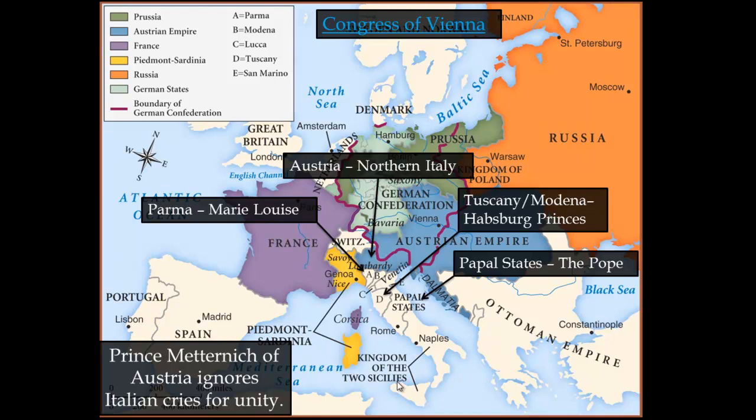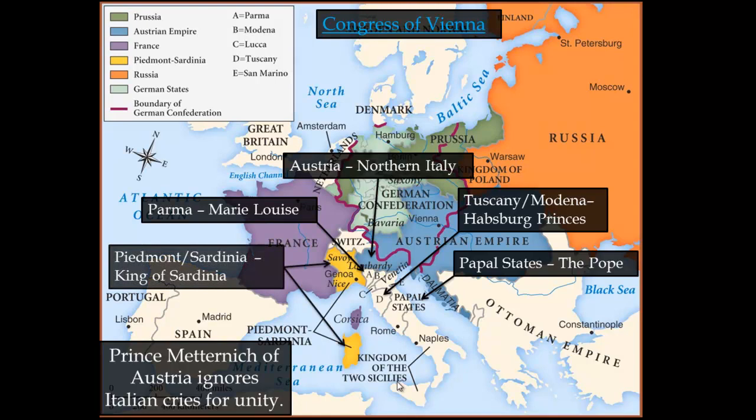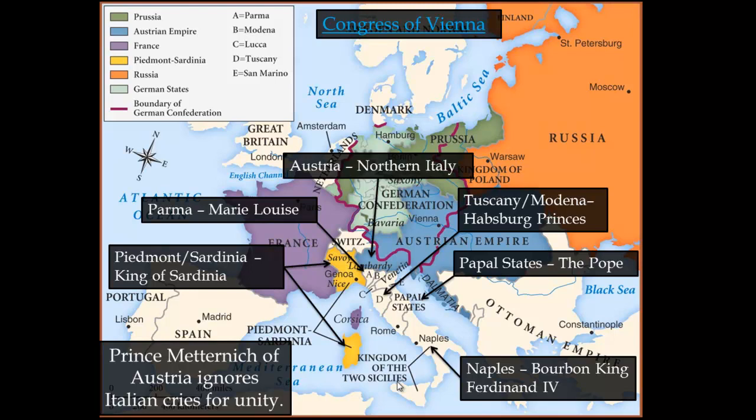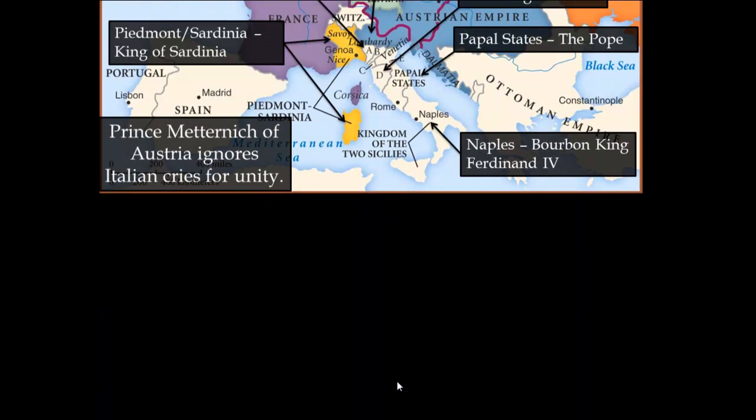The Papal States belonged to the Pope. The area of Parma belonged to Marie Louise, who was actually Napoleon's wife. The areas of Piedmont and Sardinia, the two areas in yellow, belonged to the king of Sardinia. And the final one, the area in southern Italy, belonged to the Bourbon king Ferdinand IV. So as you can see, it's highly divided up between tons of different nationalities and groups.